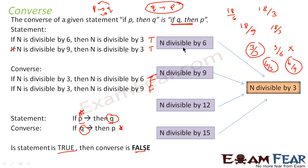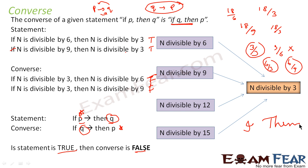Why have we written so many things — n divisible by 3, by 6, by 12, by 15? Because it is an 'if-then' statement, not 'if and only if.' In case of 'if-then,' there are many sufficient conditions. For example, if n is divided by 18 or 21, then it is also divided by 3. I've added multiple examples just to give a clearer picture of the concept.